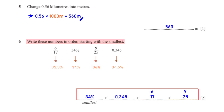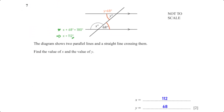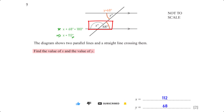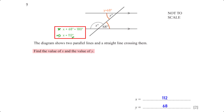The diagram shows two parallel lines and a straight line crossing them. Find the value of x and the value of y. These two angles are alternate angles — alternate angles are equal, so y is 68. Angles on a straight line add up to 180 degrees, so x plus 68 equals 180. When we subtract 68 from both sides, we get x equals 112.